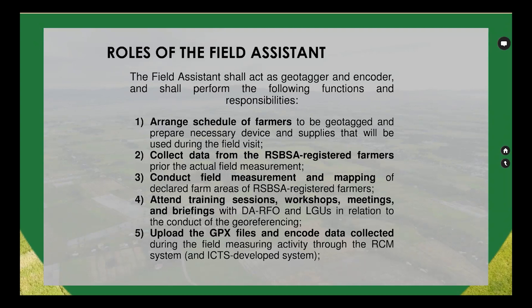Now let's go to the geo-referencers' or FAAs' roles. The field assistant shall act as geo-tagger and encoder and shall perform the following functions: first, arrange the schedule of farmers to be geo-tagged and prepare necessary devices and supplies for the field visit; second, collect data from RSBSA registered farmers prior to the actual field measurement.